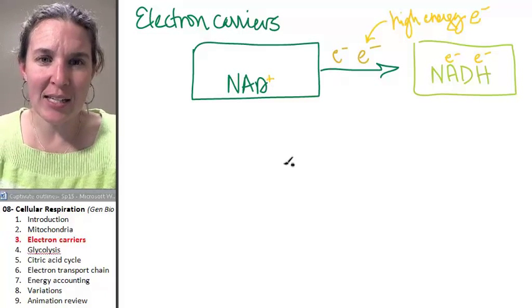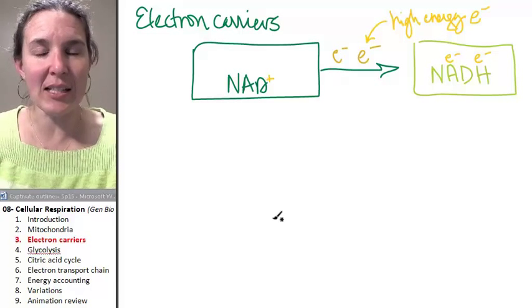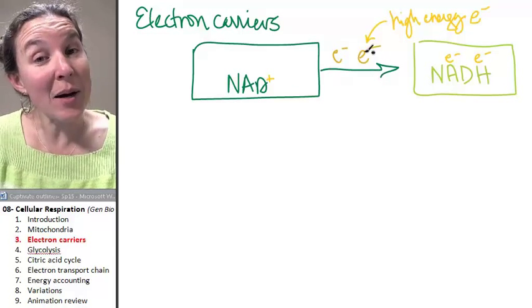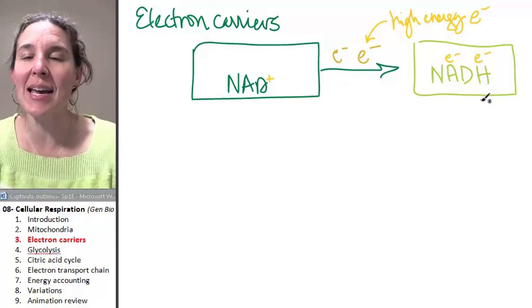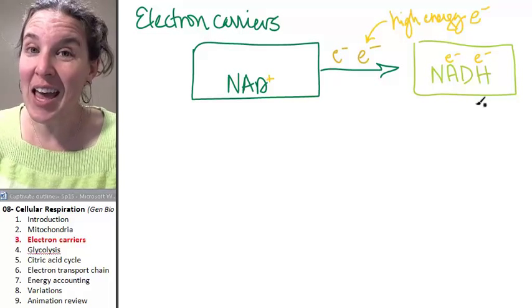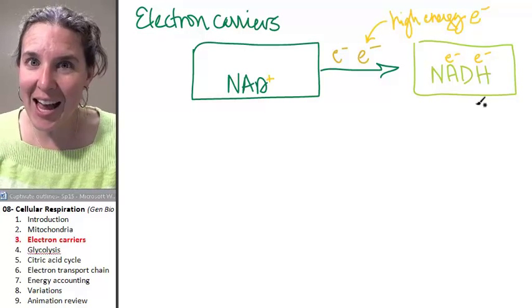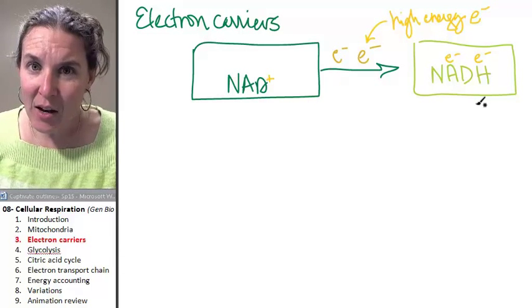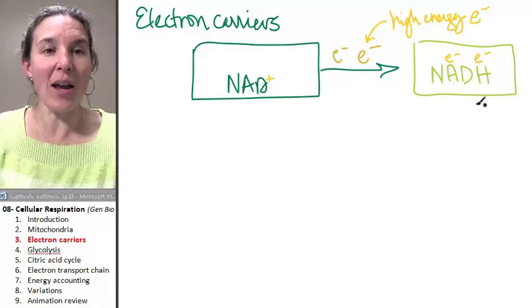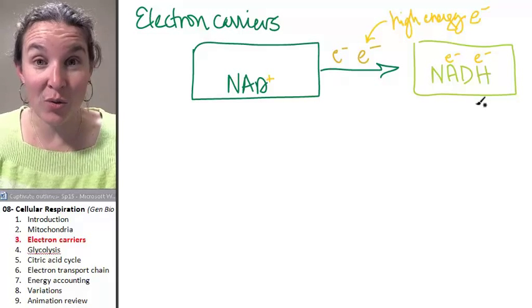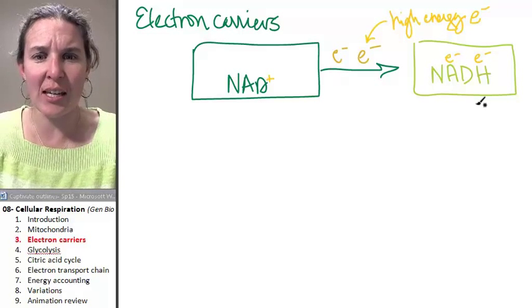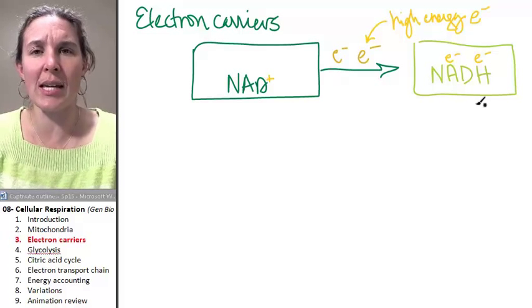And NAD, it's actually NAD+, is empty. It's not carrying any high energy electrons. If we add some high energy electrons to it, now it's NADH, and it can take those high energy electrons and basically cash them in for ATP. Think about that for a second. We know ATP is an important molecule for living systems. We know it's basically the energy currency for our whole existence.